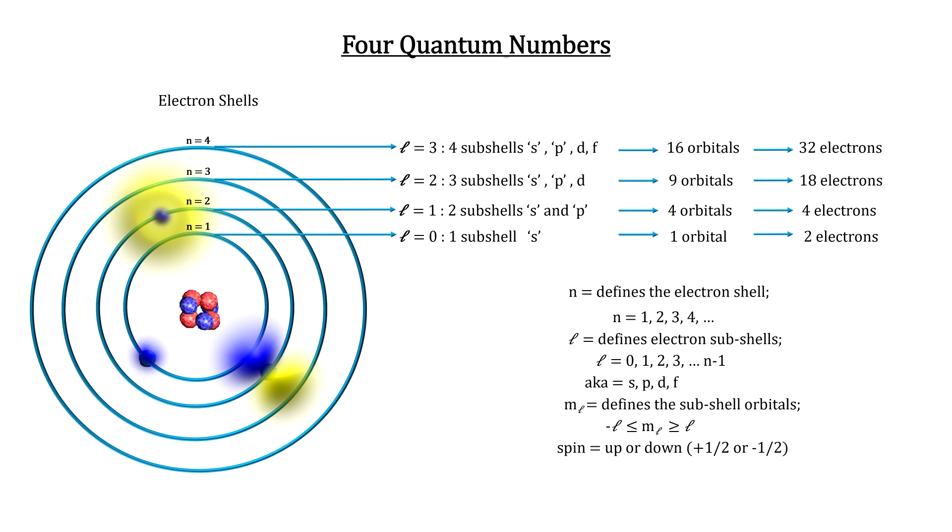And for each sub-shell, the electron's spin is quantized into two states, up and down, or plus and minus one-half.